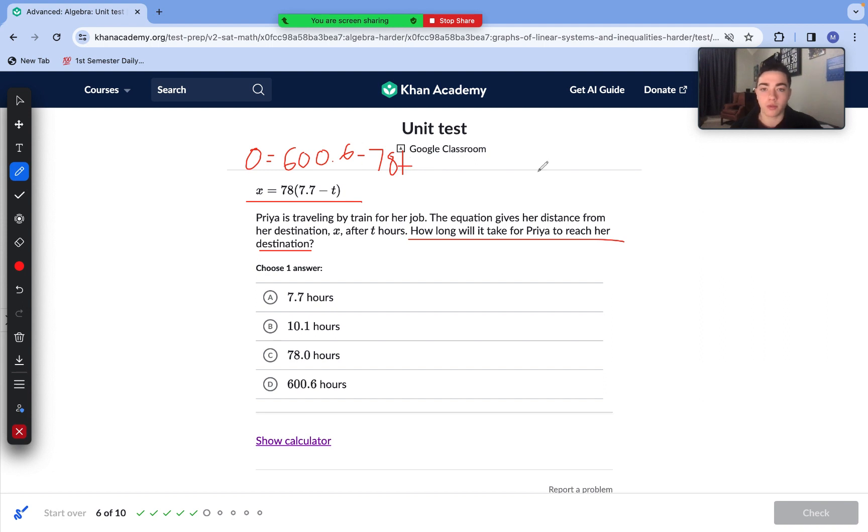Now we would subtract 600.6 from each side. -600.6 = -78t. Last but not least, we can divide both sides by -78. So 600.6 divided by 78 is 7.7. Negative divided by negative is of course positive. So t = 7.7. It takes her 7.7 hours to reach her destination.